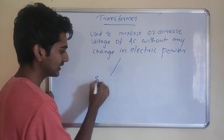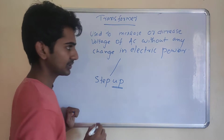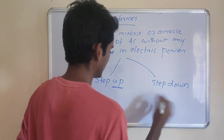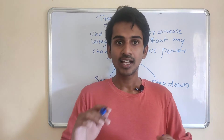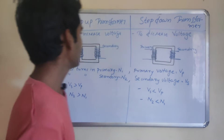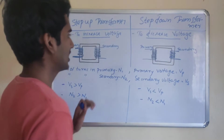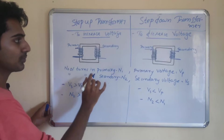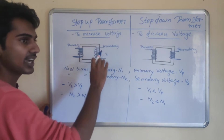One type of transformer is the step-up transformer, which increases voltage. After the step-up, there is also the step-down transformer, which decreases voltage. Now, we are going to compare step-up transformers and step-down transformers. The step-up transformer increases voltage, and the step-down transformer decreases voltage — that is, it converts higher voltage to lower voltage. In the step-up transformer, this is the primary coil and this is the secondary coil. The secondary is the output voltage. Vs is the secondary voltage and Vp is the primary voltage.